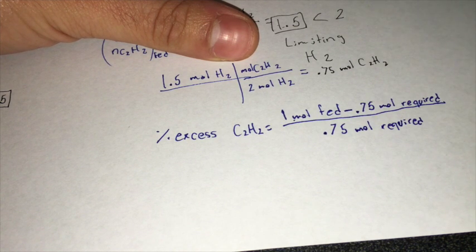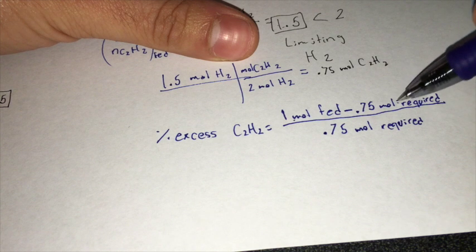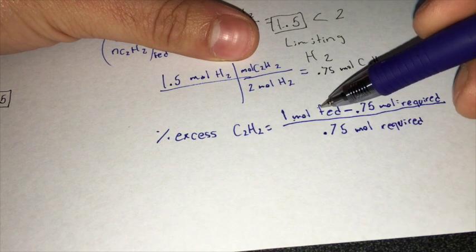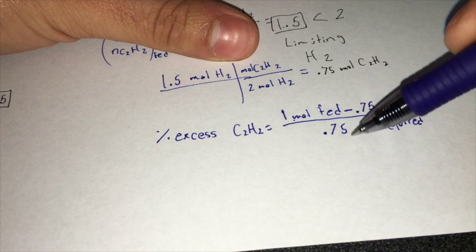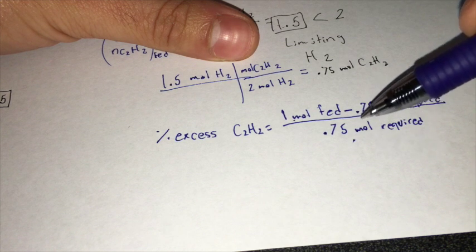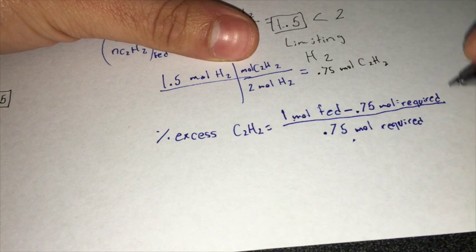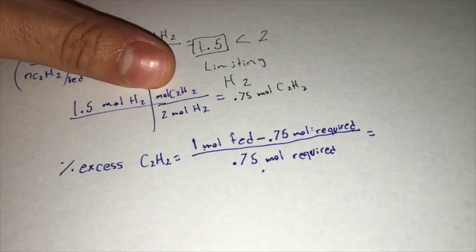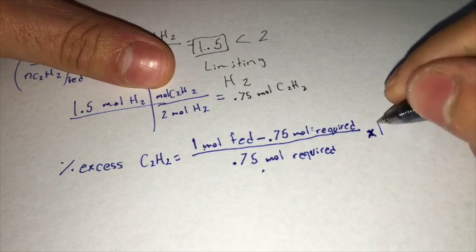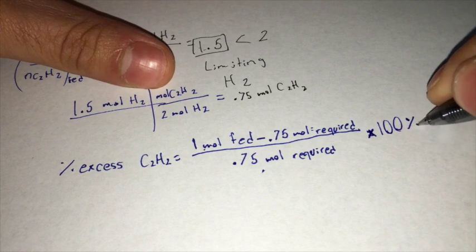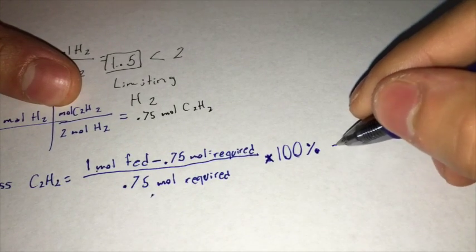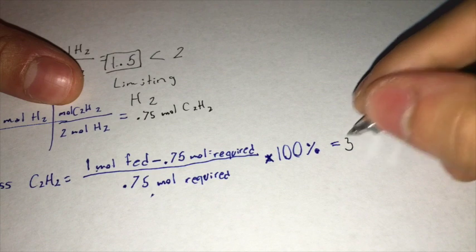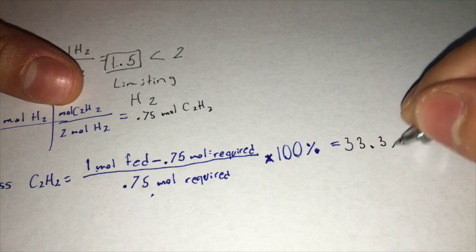We subtracted the amount of acetylene required from the amount of acetylene fed and divided it by the required amount of acetylene to obtain the moles of acetylene in excess, times 100%. It is equal to 33.3%.